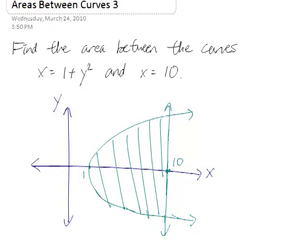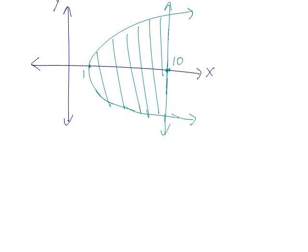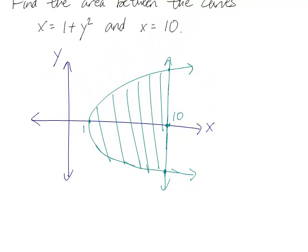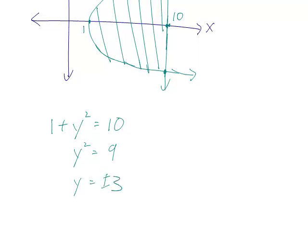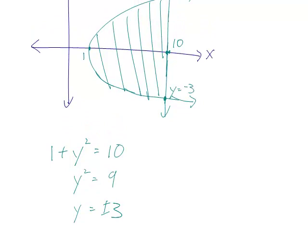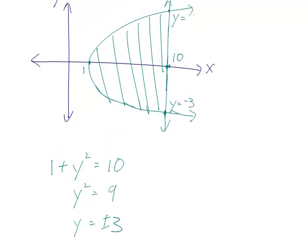So, let's first figure out what the y-coordinates of these two intersection points are. I have x equals 1 plus y squared and x equals 10. If I want to solve them simultaneously, I can set them equal to each other. So, that's pretty easy. y squared is 9, so y is plus or minus 3. So, y is minus 3, and y is plus 3 here.